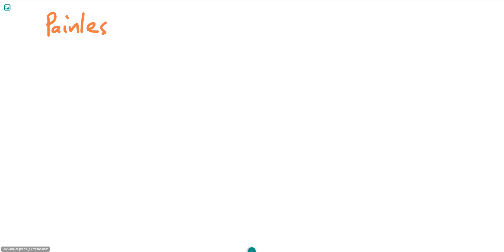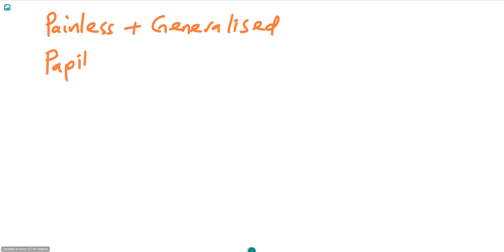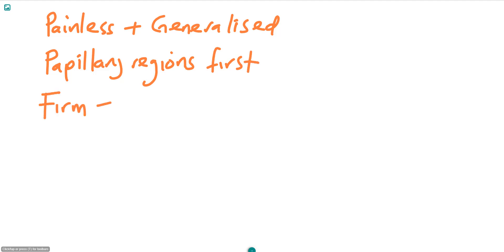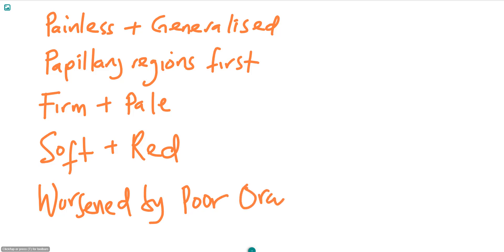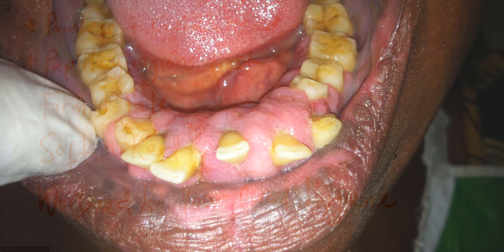To summarize: drug-induced gingival enlargement is usually a painless and generalized disorder. It starts from the papillary regions of the gingiva, is firm and pale at non-inflamed sites, but can be erythematous, soft, and painful during inflammation. It is made worse by poor dental hygiene. One thing worth noting is that the enlargement is usually more extensive in the anterior regions of the jaws, as demonstrated in this example.